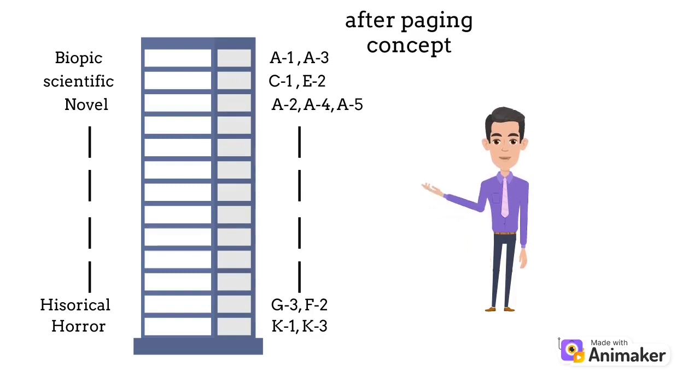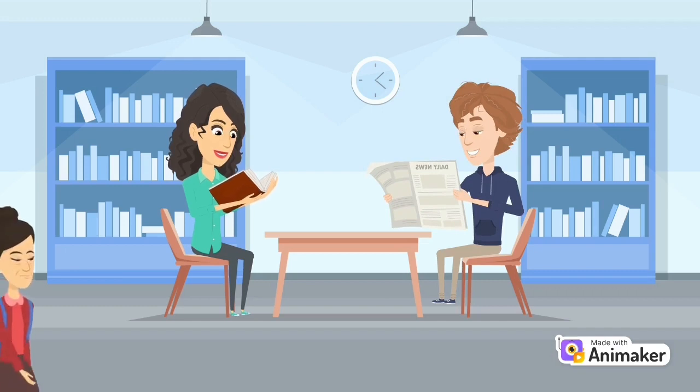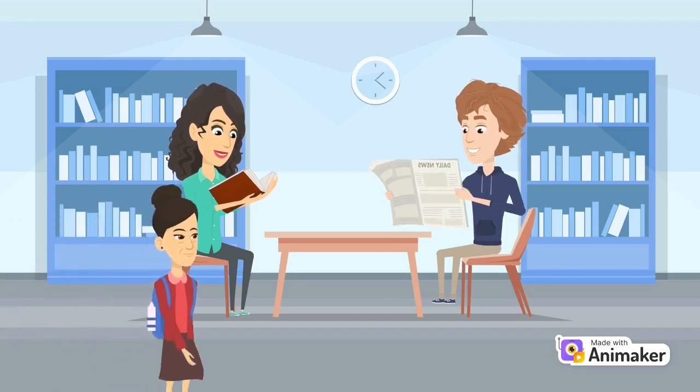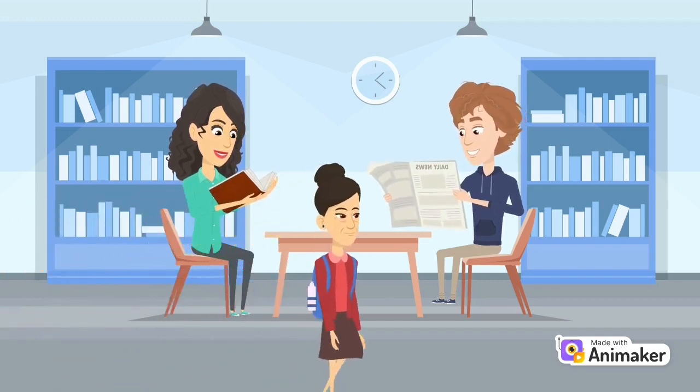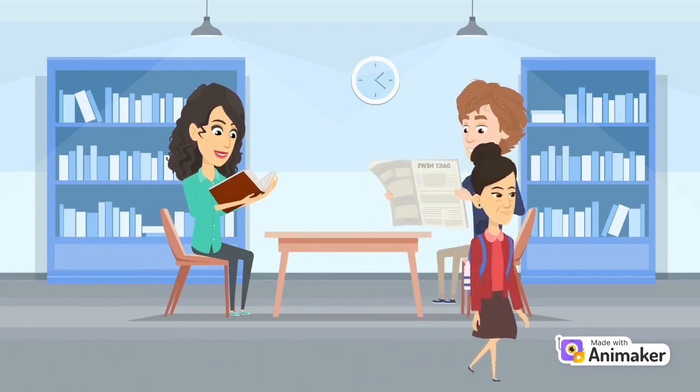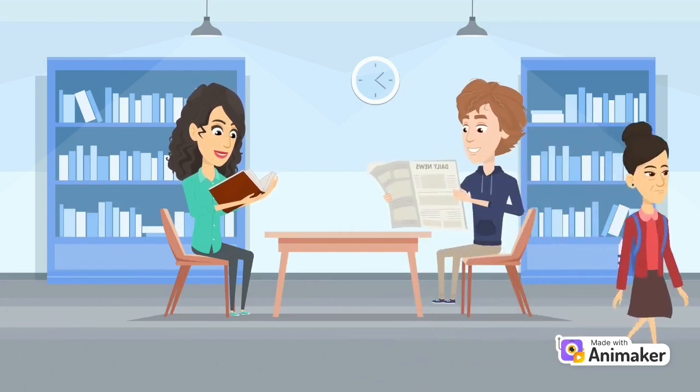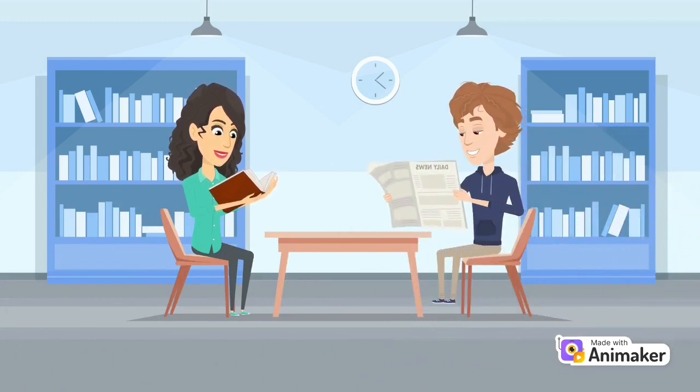Now, instead of trying to fit entire books into limited space, he was able to fit individual pages into the nooks and crannies throughout the library, fully utilizing the available space. The paging system was a resounding success. Hararam could now store more books than before, and finding specific titles became much easier. The library became even more popular, and Hararam couldn't be happier.